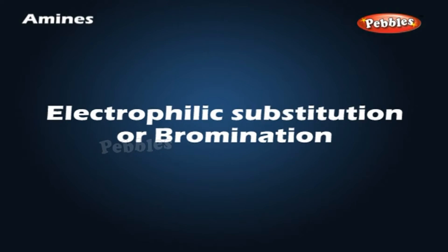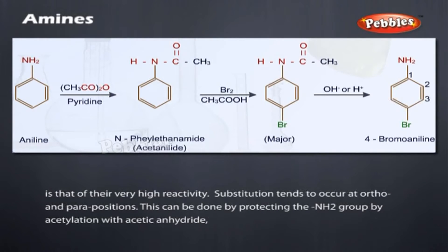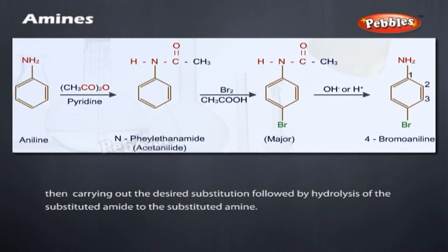Electrophilic Substitution — Bromination: Aniline reacts with bromine water at room temperature to give a white precipitate of 2,4,6-tribromoaniline. The main problem encountered during electrophilic substitution reactions of aromatic amines is their very high reactivity. Substitution tends to occur at ortho and para positions. This can be controlled by protecting the NH2 group by acetylation with acetic anhydride, then carrying out the desired substitution, followed by hydrolysis of the substituted amide to the substituted amine.